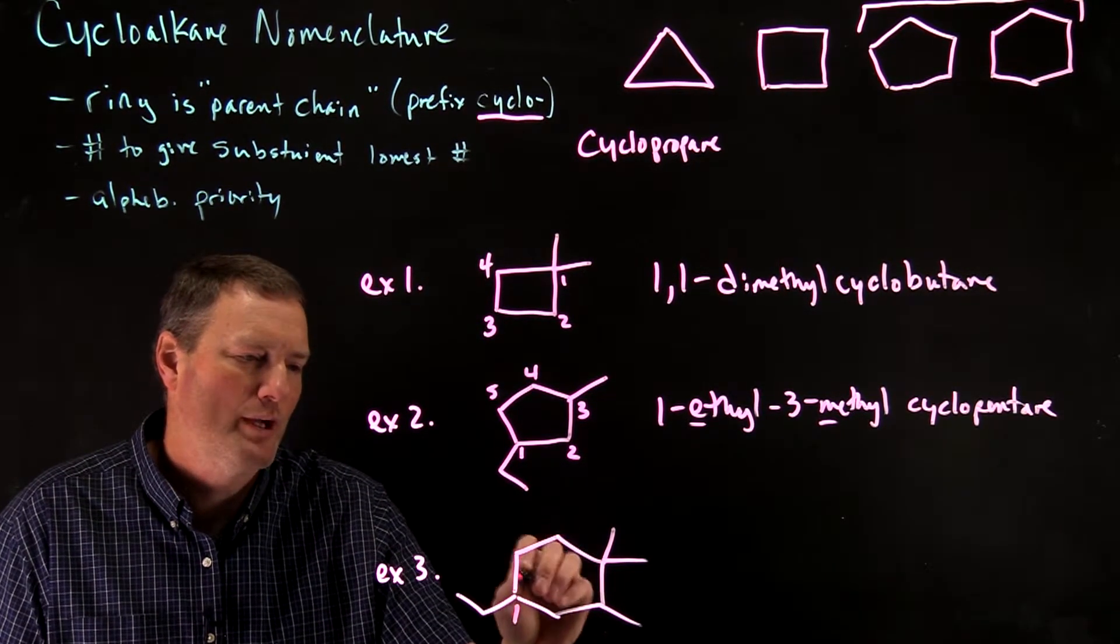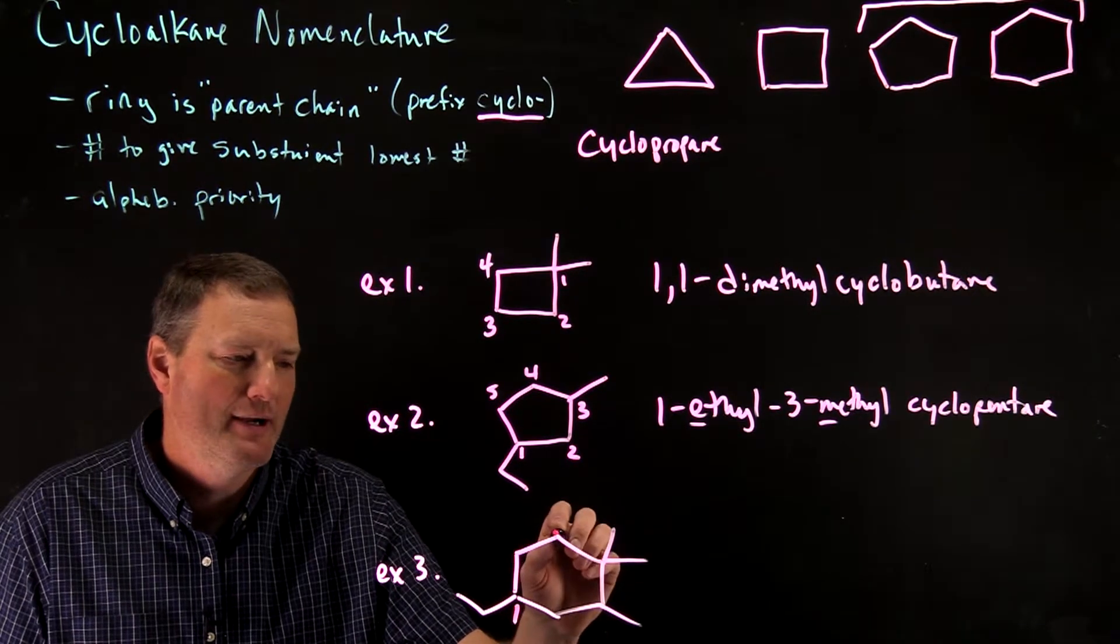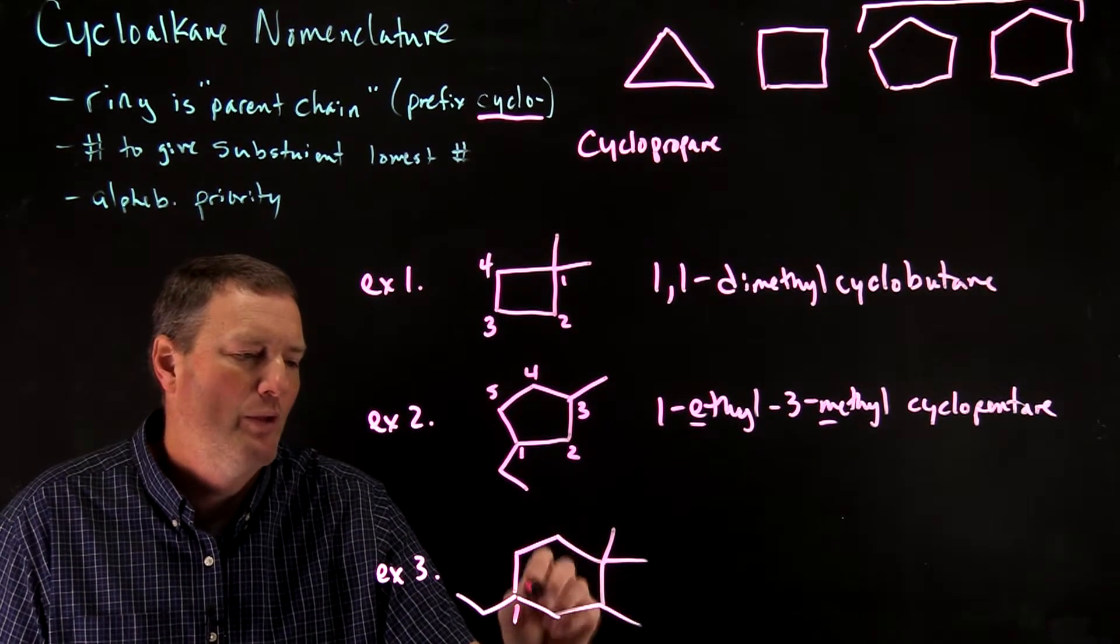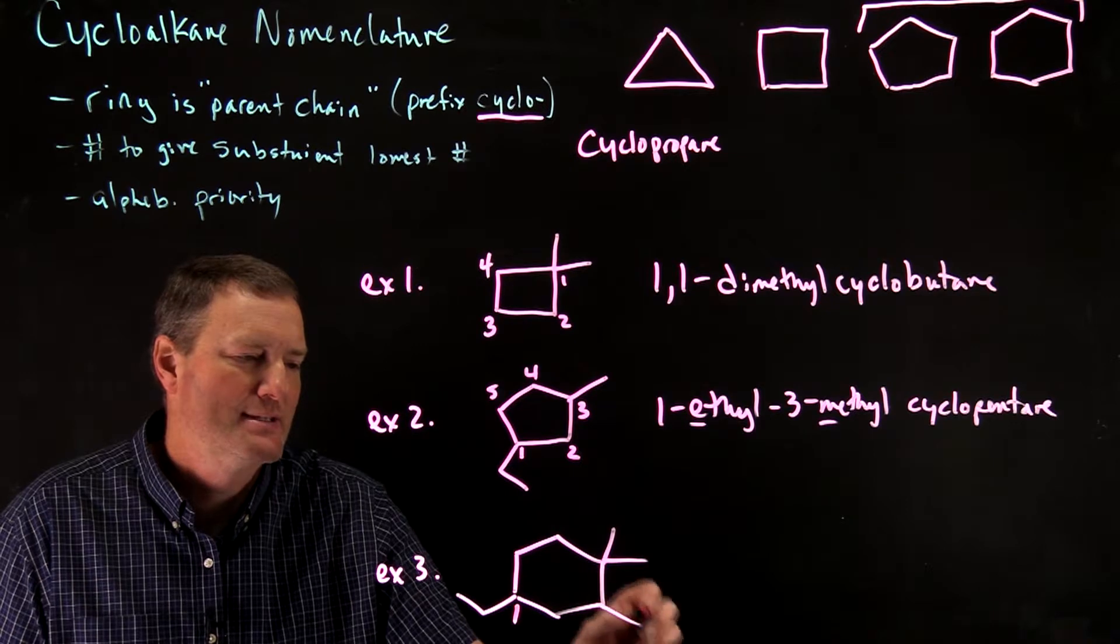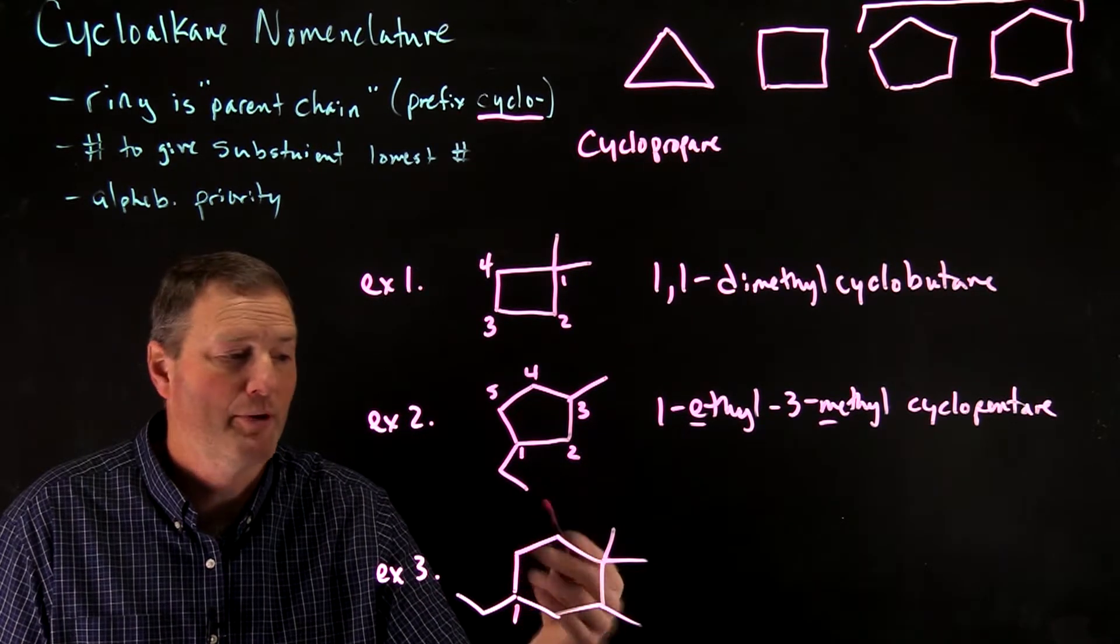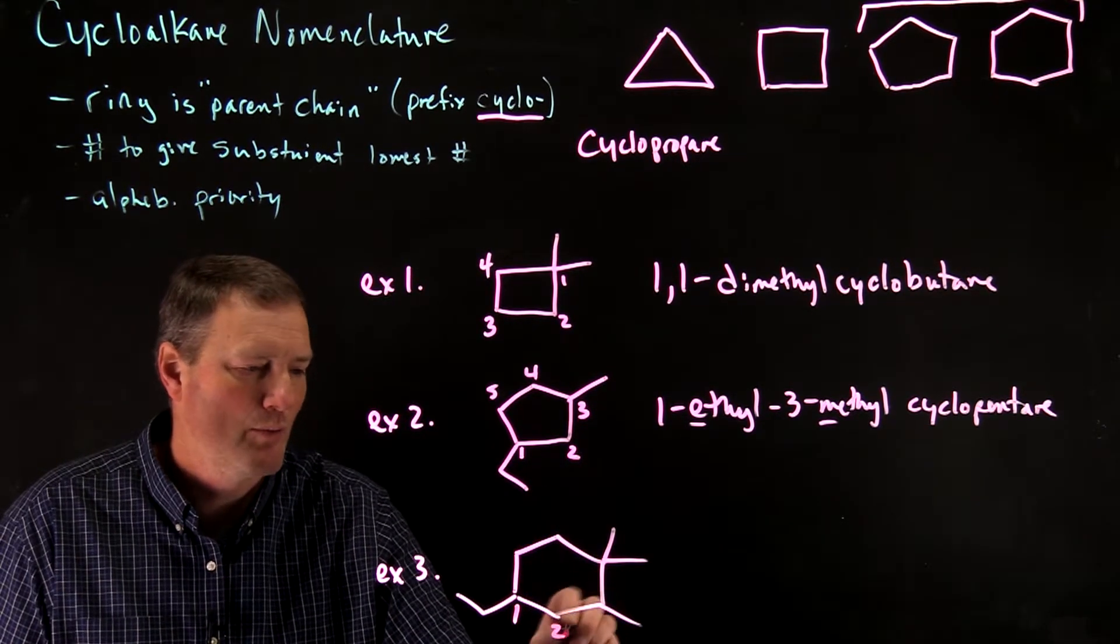And now I have to choose. Do I want to number the ring going up to the top here or going this way? Well, if I go down to the bottom, notice this methyl gets a little bit lower number than it would if I went the other direction. So I want to number it this way.